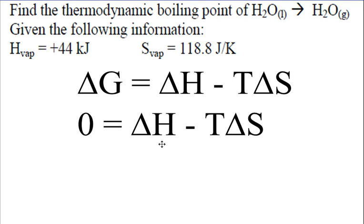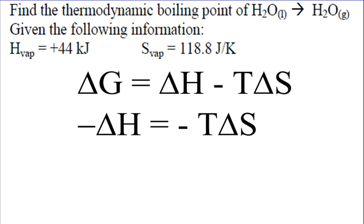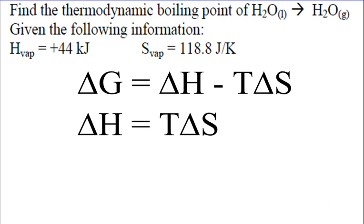So first off, we subtract delta H from both sides. We subtracted that delta H. We can divide by a negative one so we end up with a positive number on both sides. Divide by delta S, and we end up with T equals delta H over delta S.